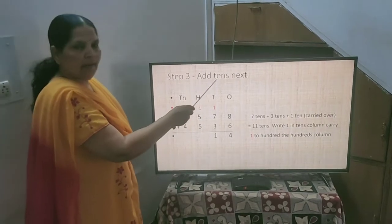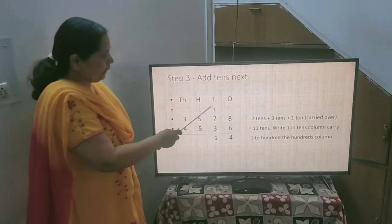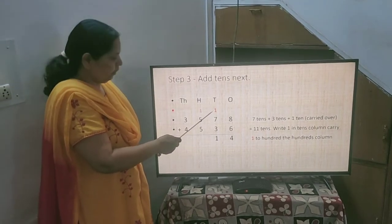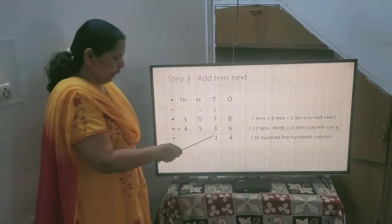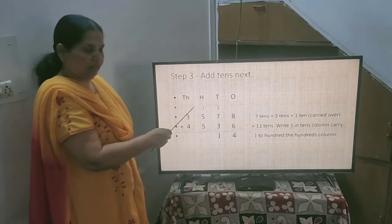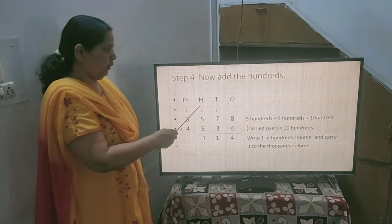Third step is add 10s. Here in 10s place you have 3 and 7 and 1 which is carried. So the total comes to 11. Write 1 in 10s place and 1 will go to 100s as a carried over.